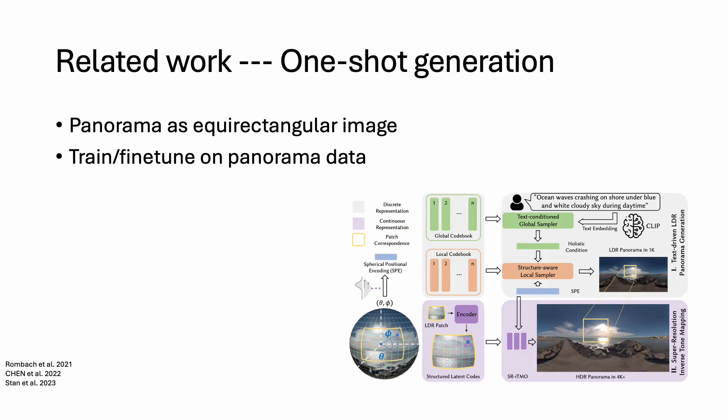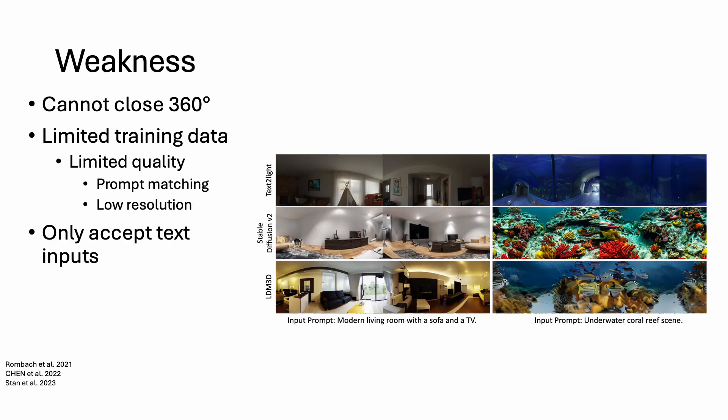Another line of research treats the panorama as a single equirectangular image and generates it in one shot. However, the inherent drawback of the equirectangular representation makes these methods hard to close the 360-degree loop, resulting in a sharp boundary in the middle of the panorama. In addition, due to limited data, these methods have limited generation quality, and some of them only accept text as input.